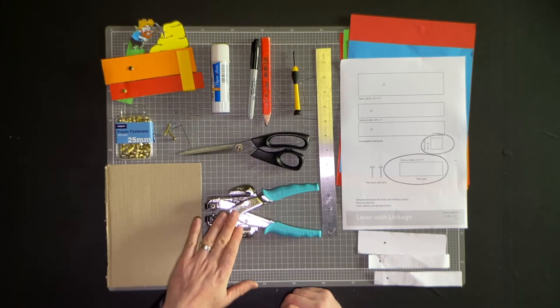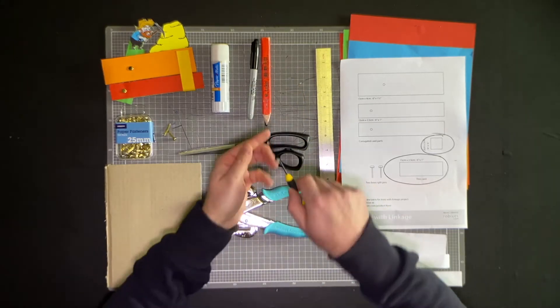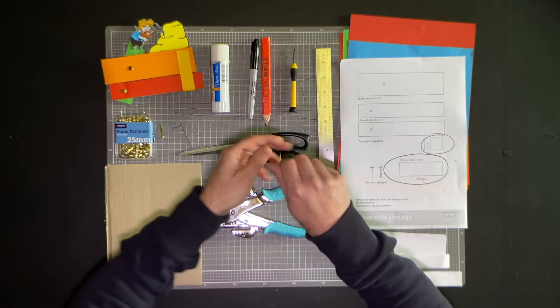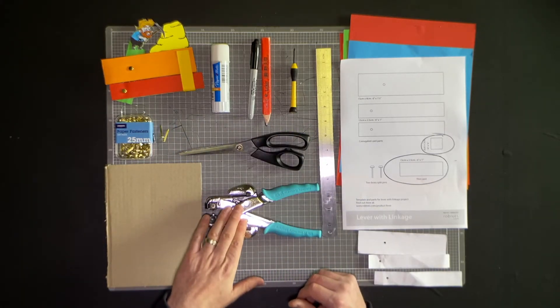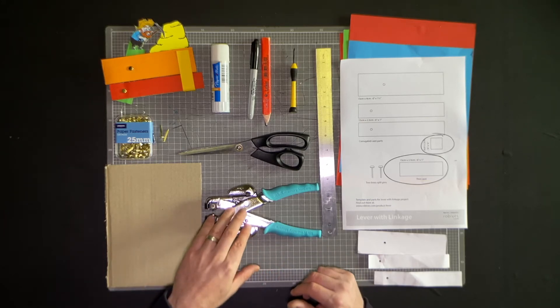If you have access to a hole punch, that will be handy for punching the holes for the split pins. If you don't, you could use something like a screwdriver and poke through the cardboard or even try the split pins by poking that through. A hole punch helps but it's not essential, it does help to just make those split pins rotate freely.